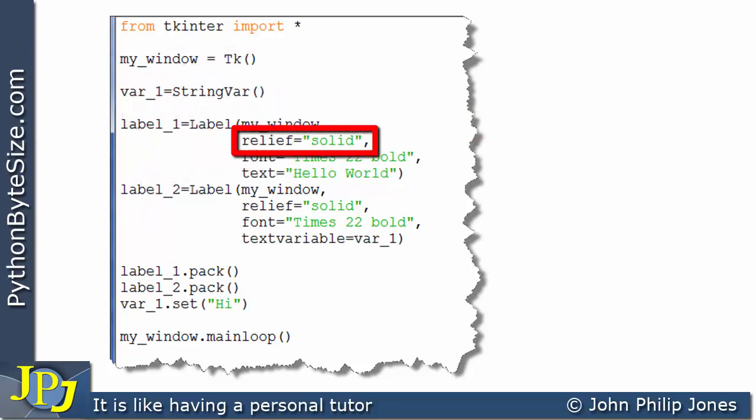This line is going to ensure that the border of the label can be seen as a line around the border. This is setting the font and this is setting the text of the label to hello world. And this is an example of a key value pair where this is the key and this is the value associated with that key. And all of these are referred to as named arguments.